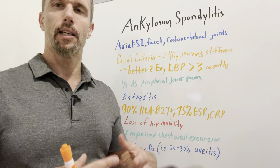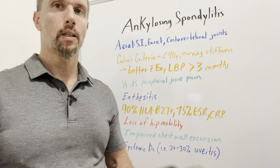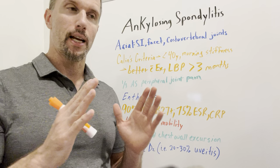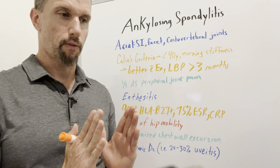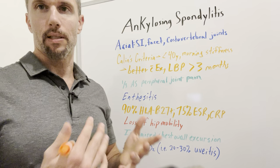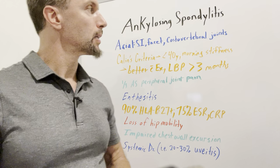Ankylosing spondylitis is a disease where the back gets stiffened and you have back pain. It has some systemic issues as well. Ankylosing refers to fusion — as this disease progresses to end stages, you can see on x-ray ossification and fusion between the vertebrae, so all the vertebrae become basically one unit, called bamboo spine appearance. Spondylo means back/spine, and itis means inflammation.